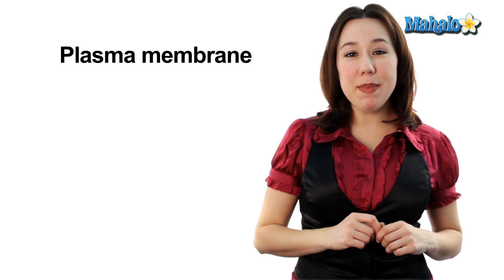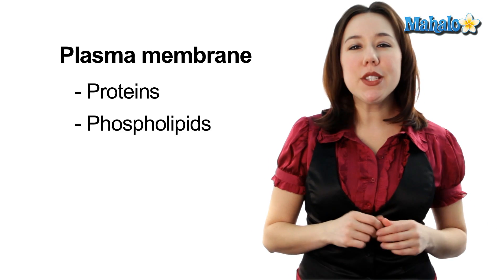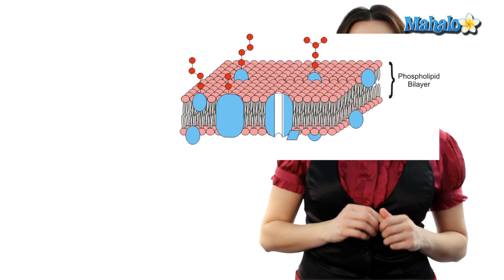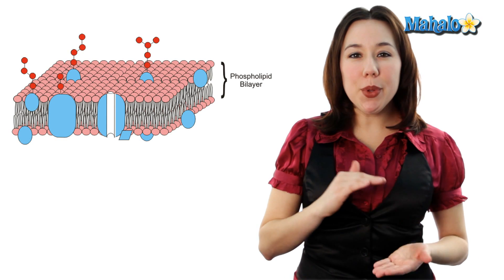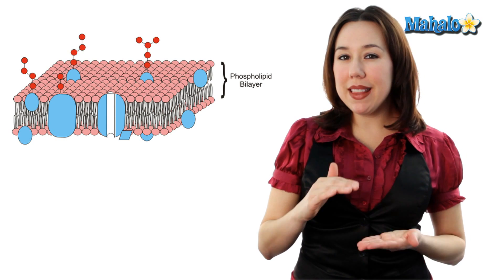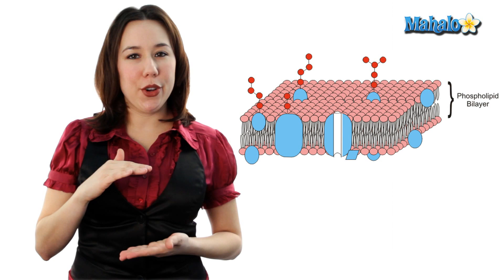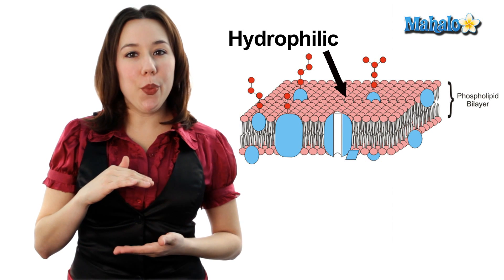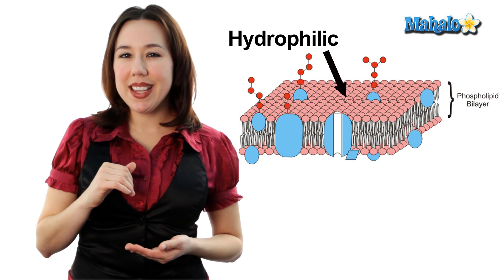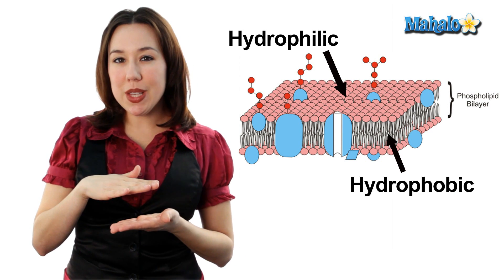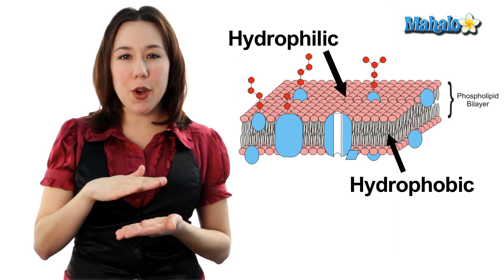The plasma membrane is made up of mostly proteins and special lipids called phospholipids. These phospholipids arrange in a double layer or bilayer arrangement. The top and the bottom of this bilayer arrangement are water loving or hydrophilic, and the inside of the tails is going to be water hating or hydrophobic.